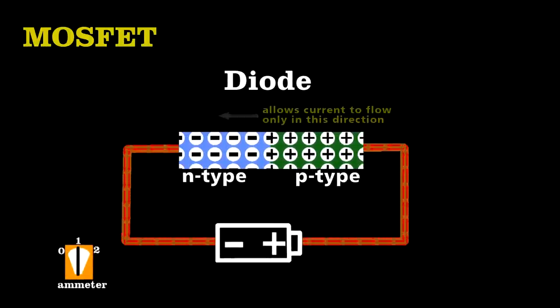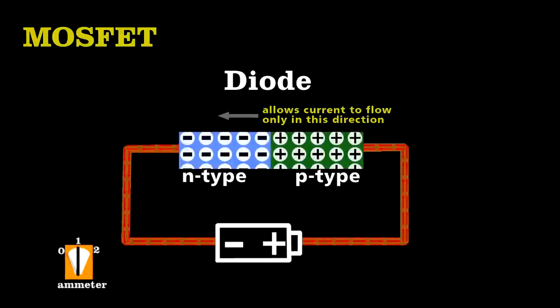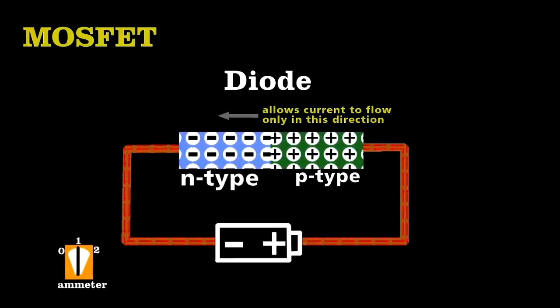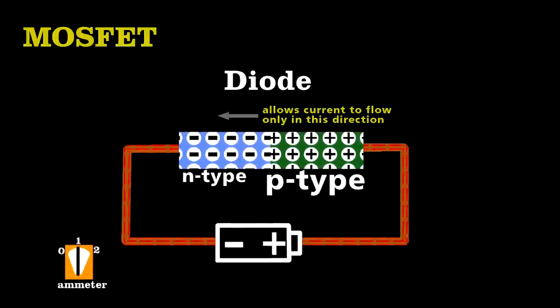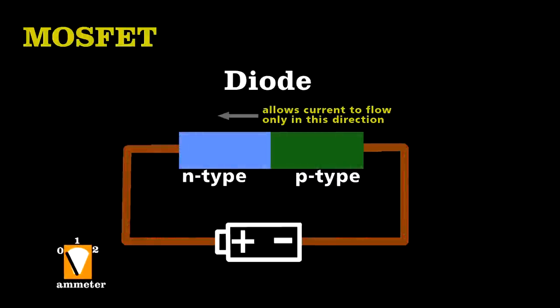Recall that a diode allows current to pass in only one direction, because it uses two types of semiconductors: a type that uses negative charge carriers, and one that uses positive charge carriers. Flip that battery, and the flow of charge stops.